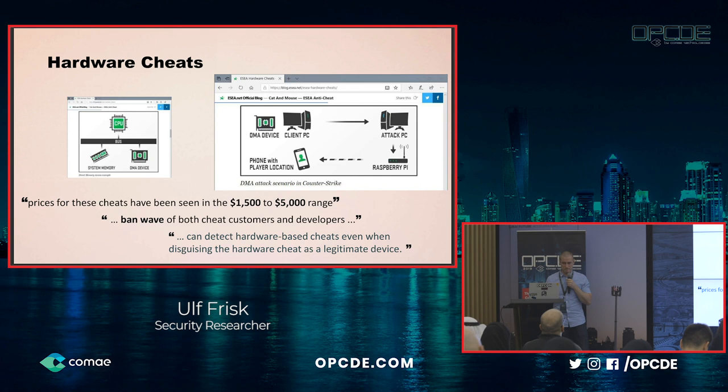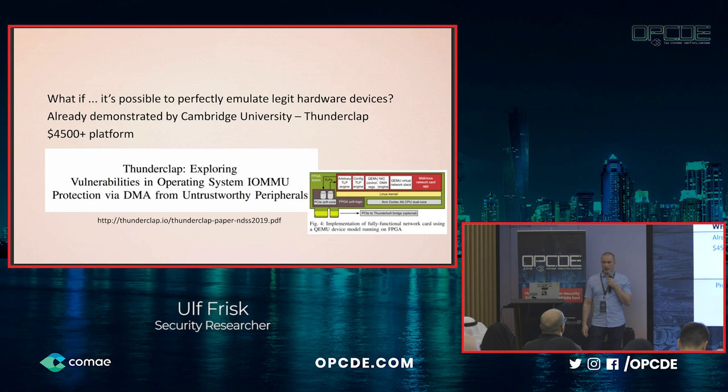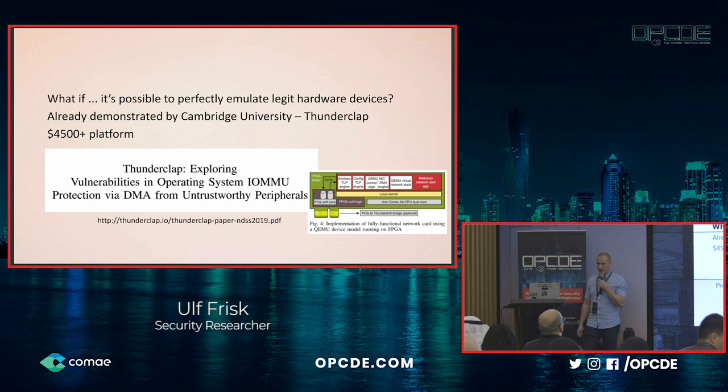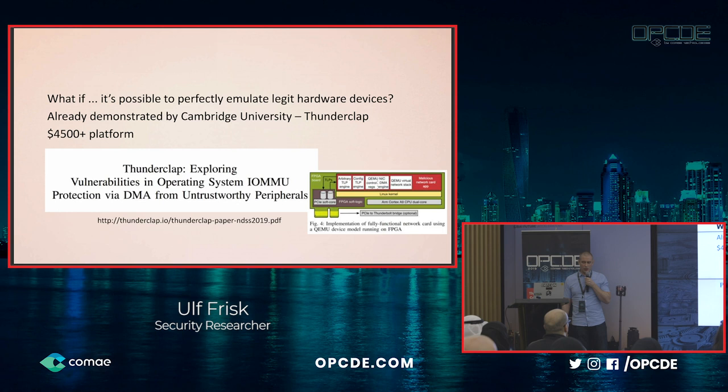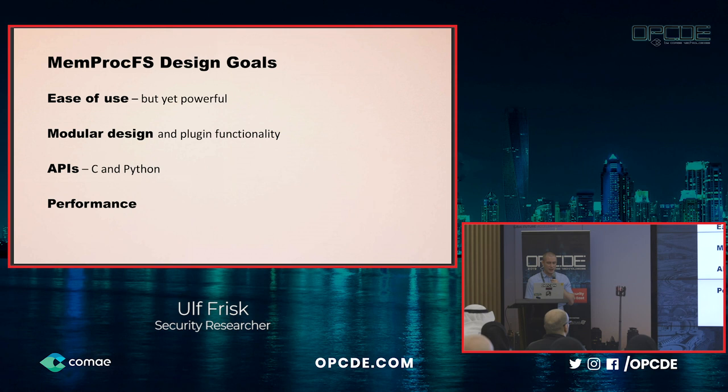But what if it was possible to perfectly emulate a legit hardware device? In the last couple of months, this has already been demonstrated by researchers at Cambridge University in their Thunderclap paper. They used a really expensive hardware setup — around $4,500 — but were able to emulate a networking card entirely in software. We may see this in the gaming area in the future as well. But let's continue with the Memory Process File System and the memory analysis part.